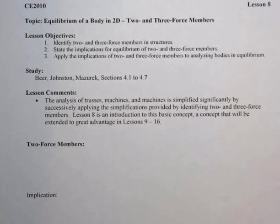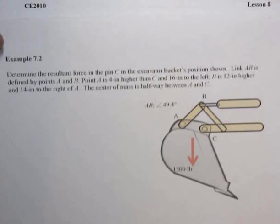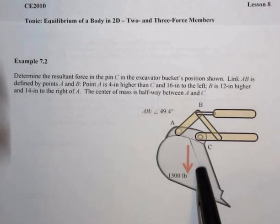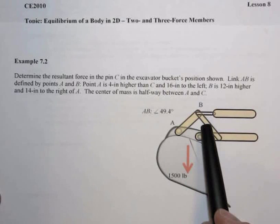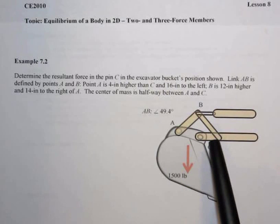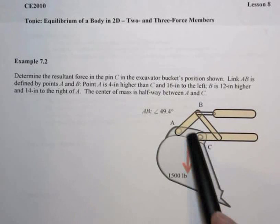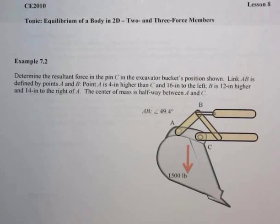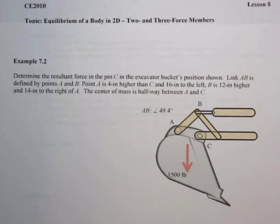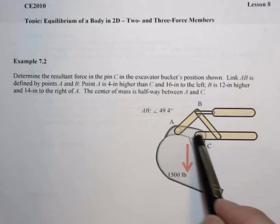For instance, if you go back to example 7.2 where we had a bucket from a backhoe that had a whole mechanical assemblage there, in analyzing all the little pieces of this, if we can identify members that are two force members, it reduces the number of unknowns significantly and helps solve the problem quite a lot more quickly. So that's the kind of problem that we begin to look at.